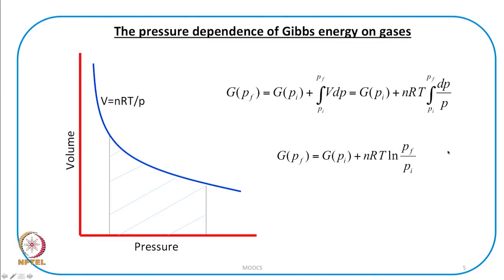Thus the pressure dependence of Gibbs free energy for an ideal gas is: G(P_f) = G(P_i) + nRT ln(P_f/P_i). However, this equation is strictly applicable to ideal (perfect) gases. What we have discussed so far on the properties of the Gibbs function is that both temperature dependence and pressure dependence give a lot of information.